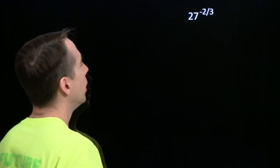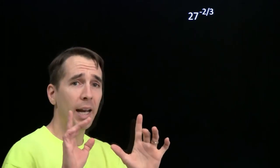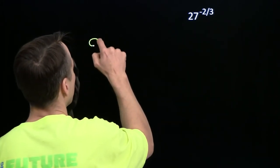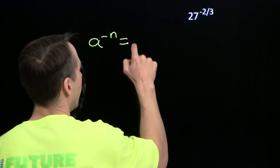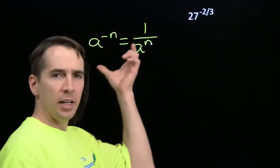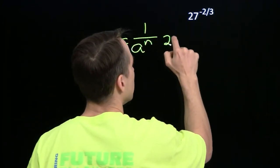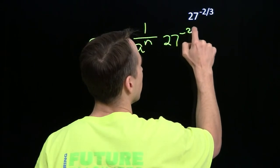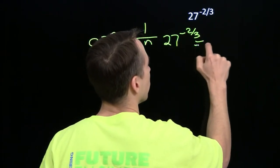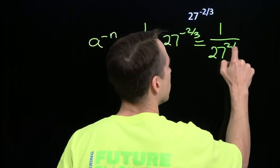Another 27. Well, this time we have a negative exponent. Well, we know how to handle negative exponents. If we have something like a to the minus n and a isn't 0, we can write this as 1 over a to the n. We're going to do the same thing here. That'll at least take care of the negative exponent. 27 to the negative 2 thirds is just 1 over 27 to the 2 thirds.